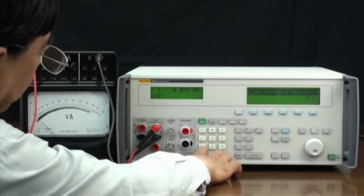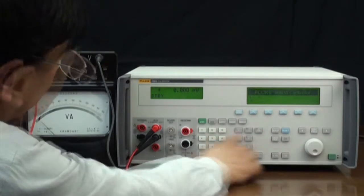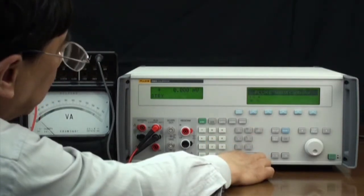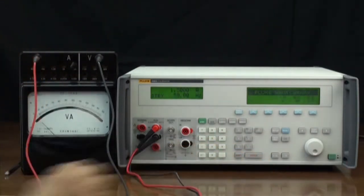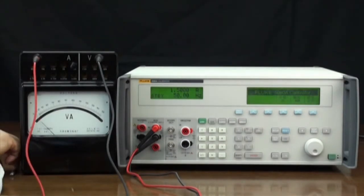Set the 5080A to output 1.5 amps and frequency to 50 hertz. Press the enter key. At this time, the calibrator's in standby mode.